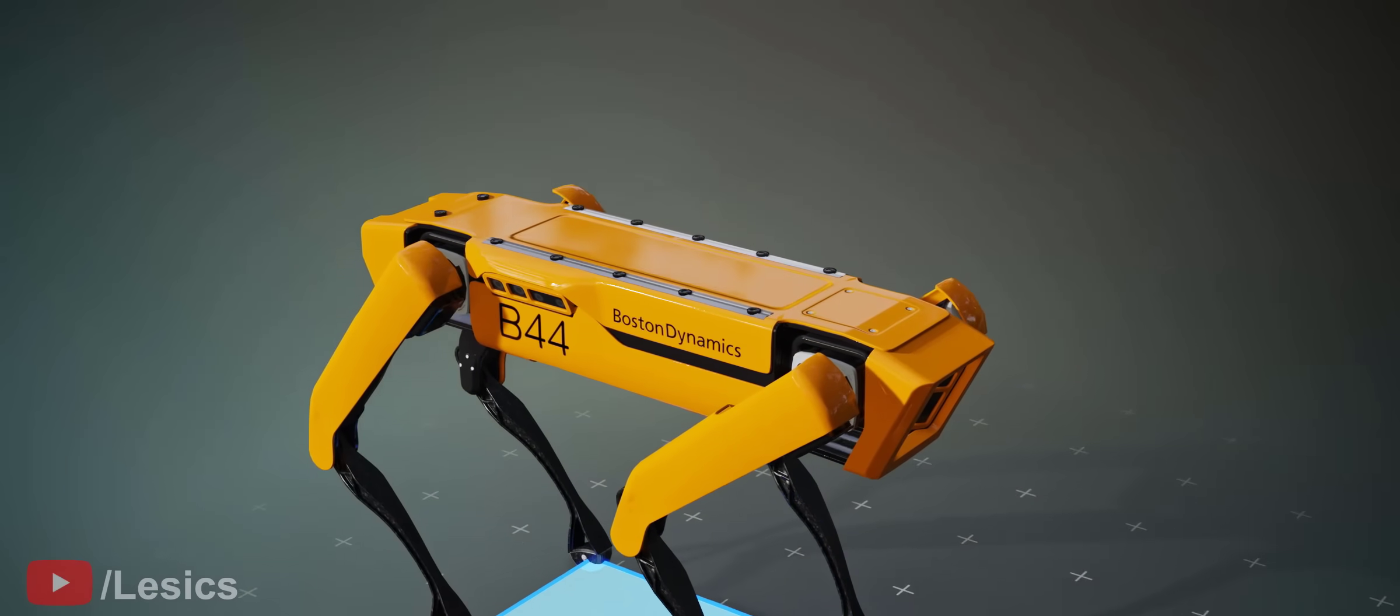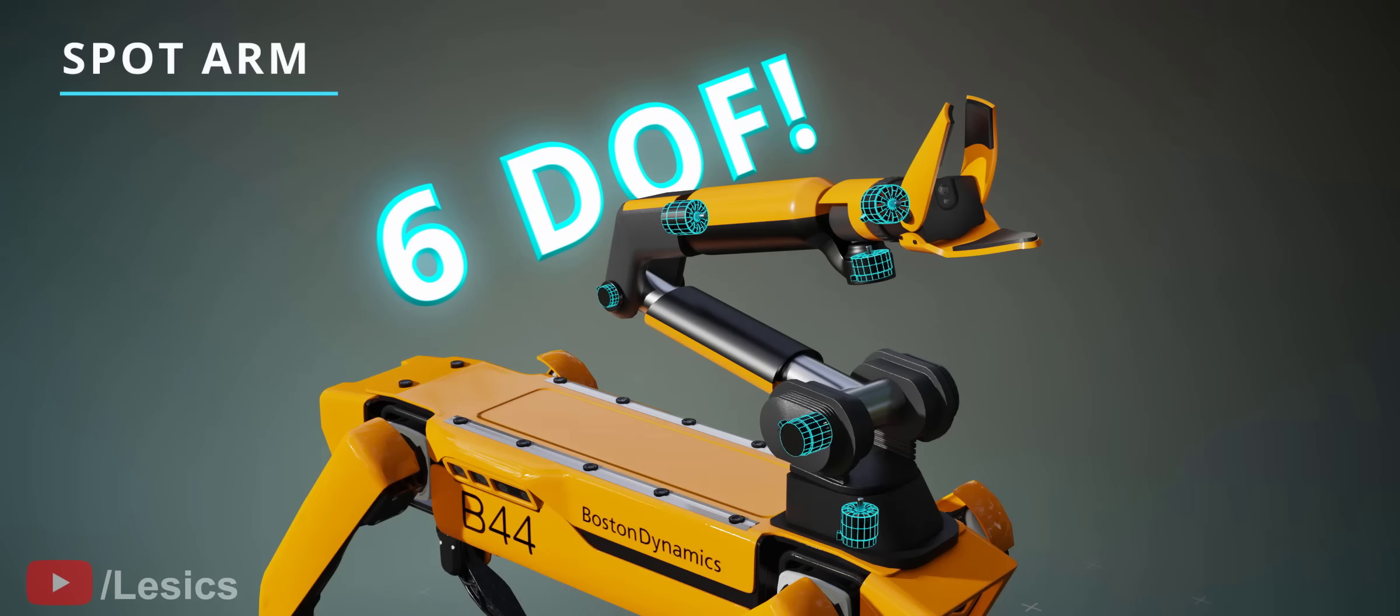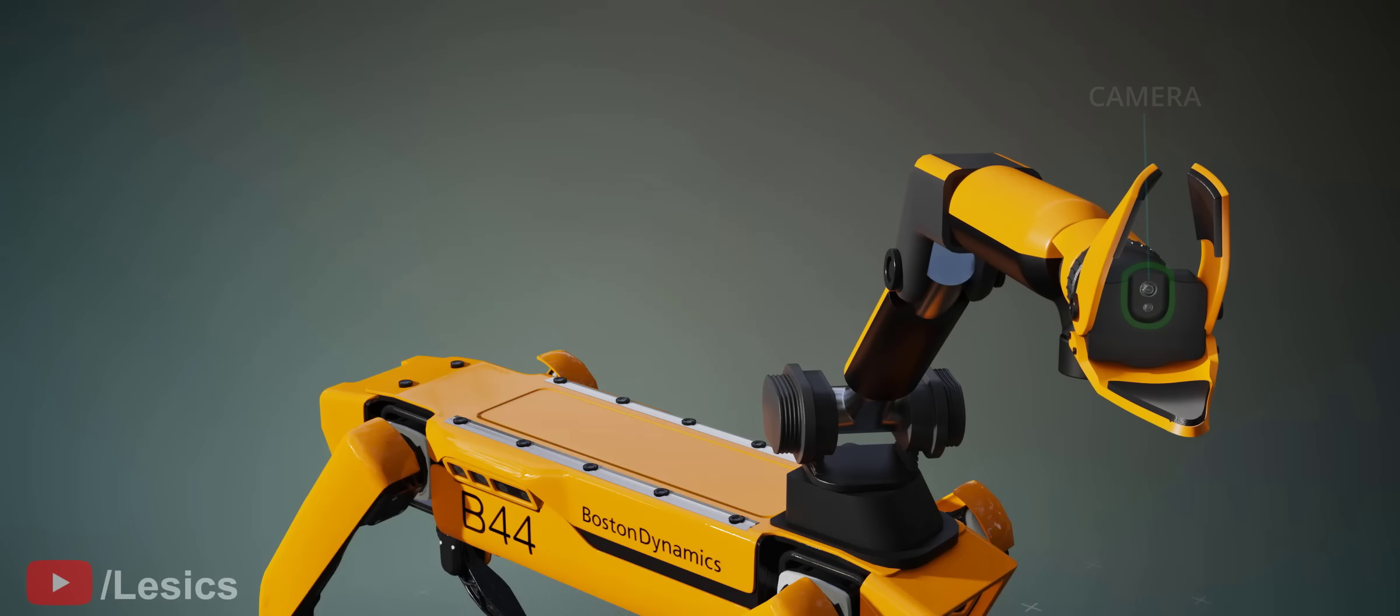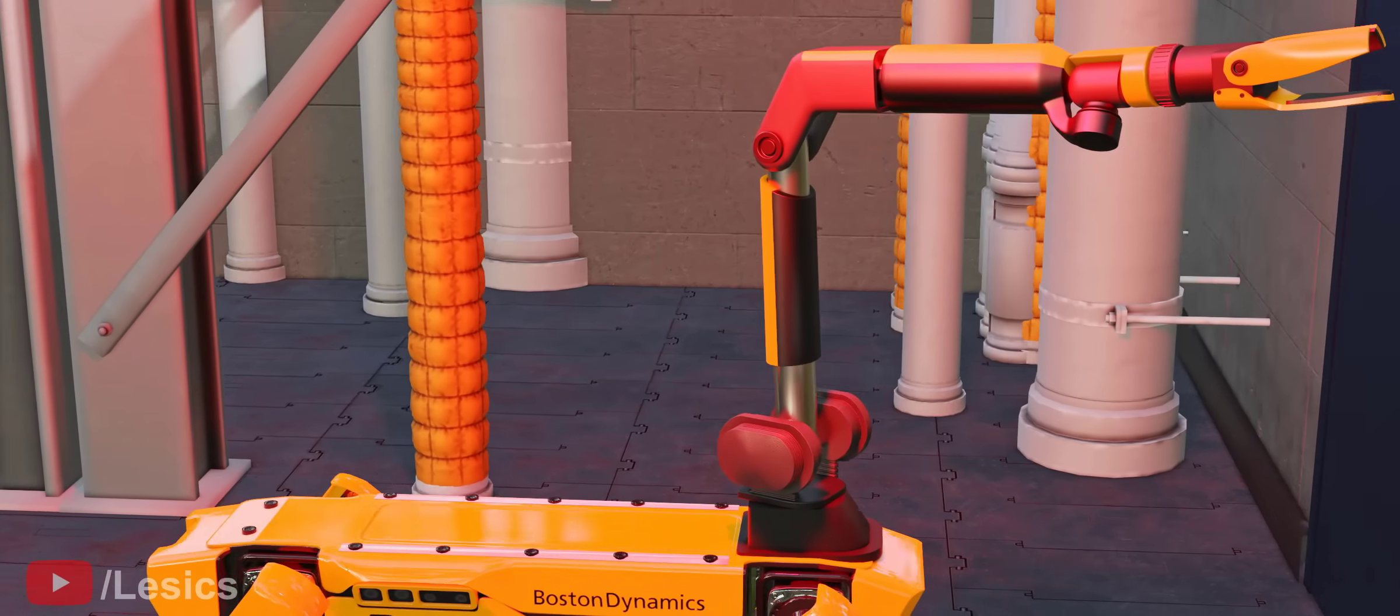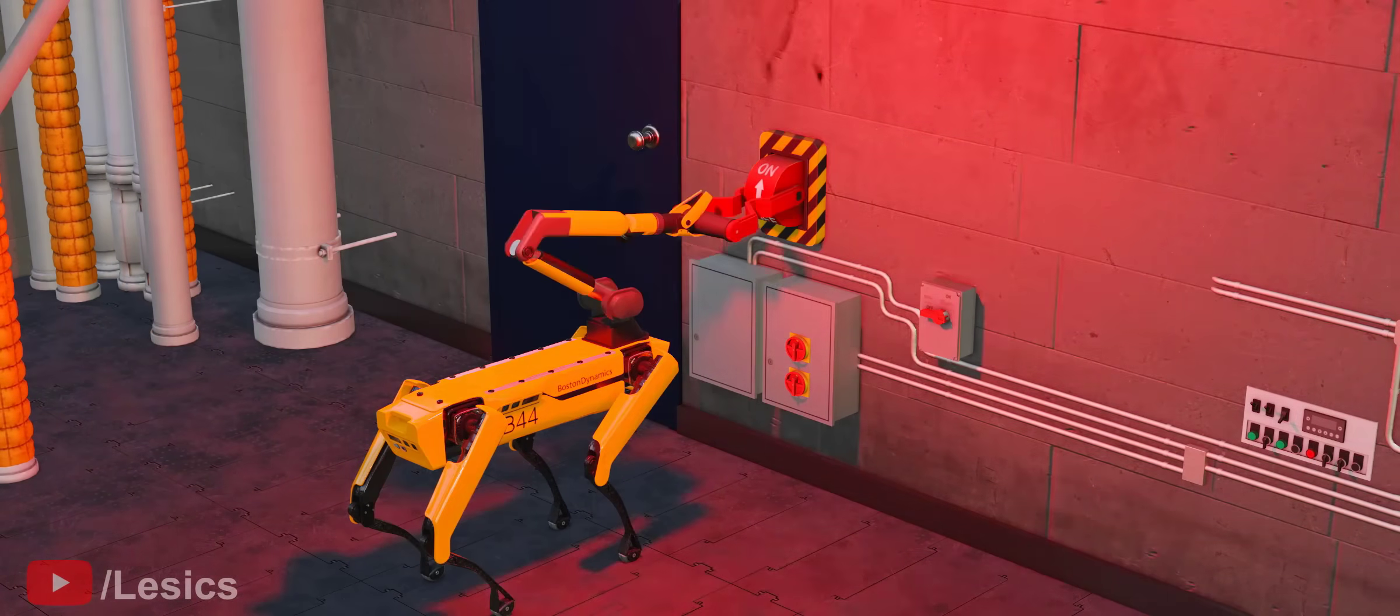The spot can also be fitted with an arm on its mounting rails. This arm includes six motors for six DOF and a gripper to grasp objects. To detect objects, a camera is placed inside the gripper like this. With this arm, it can easily pull the levers in industries or open doors in a people-filled environment.